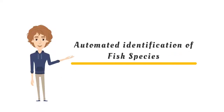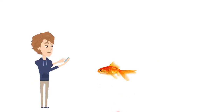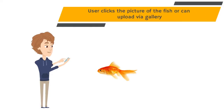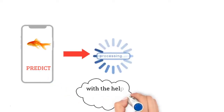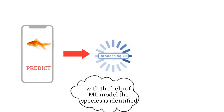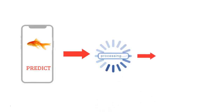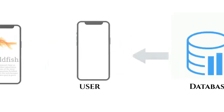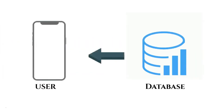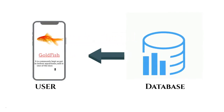Automated identification of fish species. The user clicks a picture of the fish or can upload one via the gallery. With the help of a machine learning model, the species is identified. The identified species details are then fetched from the database and displayed on screen.